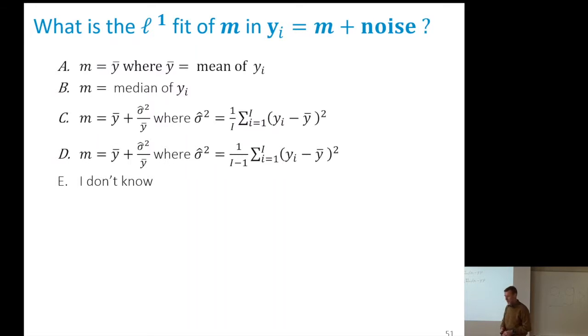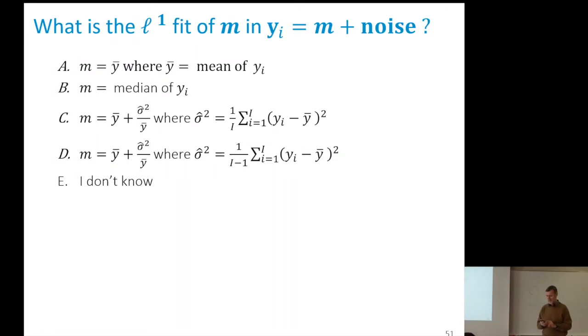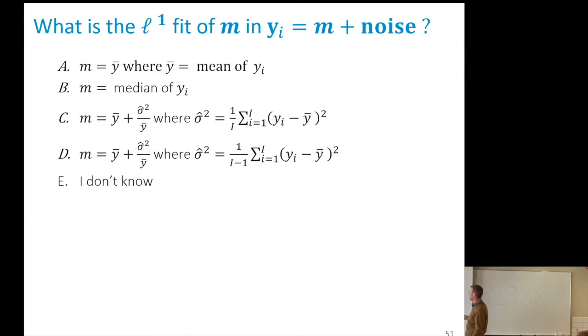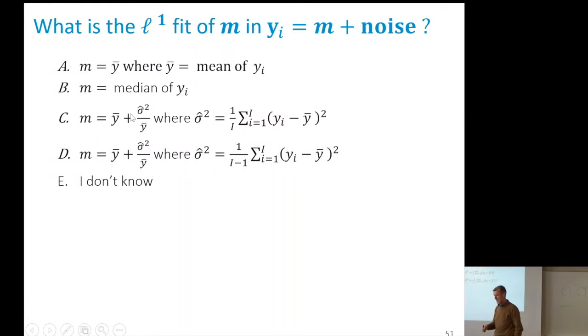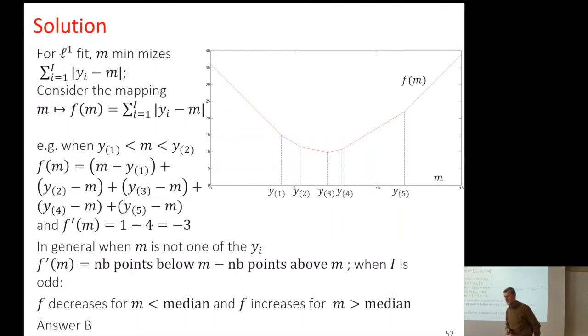Same question now with L1 instead of L2 — minimum absolute deviation instead of minimum least squares. The answer is the median, which is correct. It is the median. A bit more difficult to understand why, but let's do it.